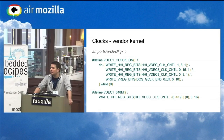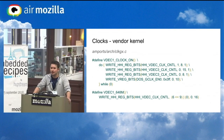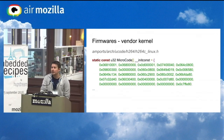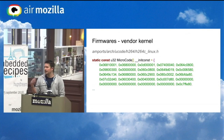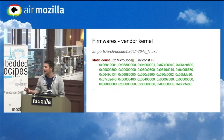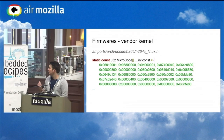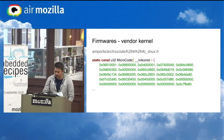For clocks, the vendor kernel just has macros that write directly to clock registers to set them up. The right way to do it in the mainline kernel is to rewrite all this into the clock framework, which works great. Firmwares are fortunately still in the vendor kernel — internal firmware in header files. You just dump those arrays to files and you get the firmware pretty easily. One nice thing is that those header files are licensed under the GPL, so you can redistribute the firmware freely.